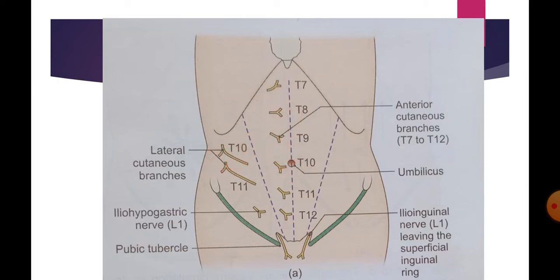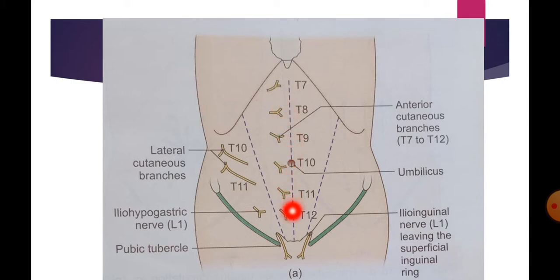The anterior cutaneous nerves are seven in number. They are derived from the lower five intercostal nerves, the subcostal nerve, and the iliohypogastric nerve. The lower five intercostal nerves are T7, T8, T9, T10, and T11. The subcostal nerve is T12.